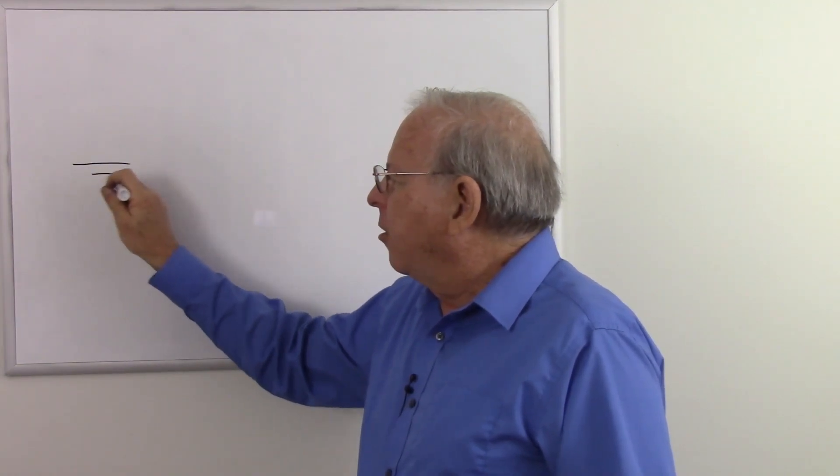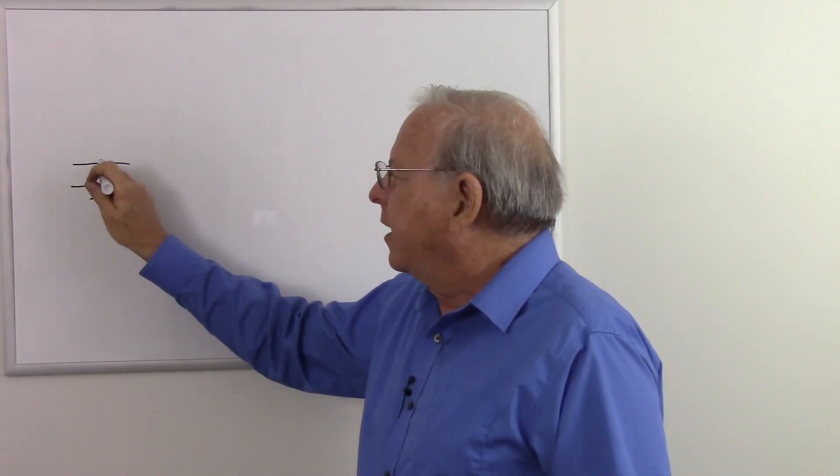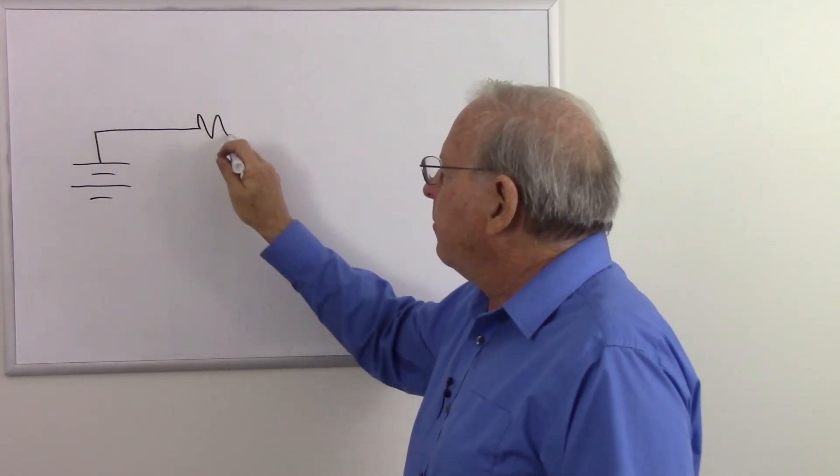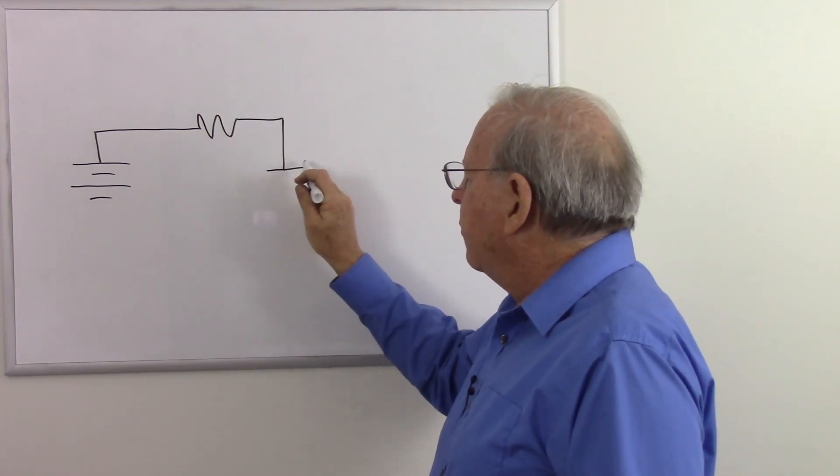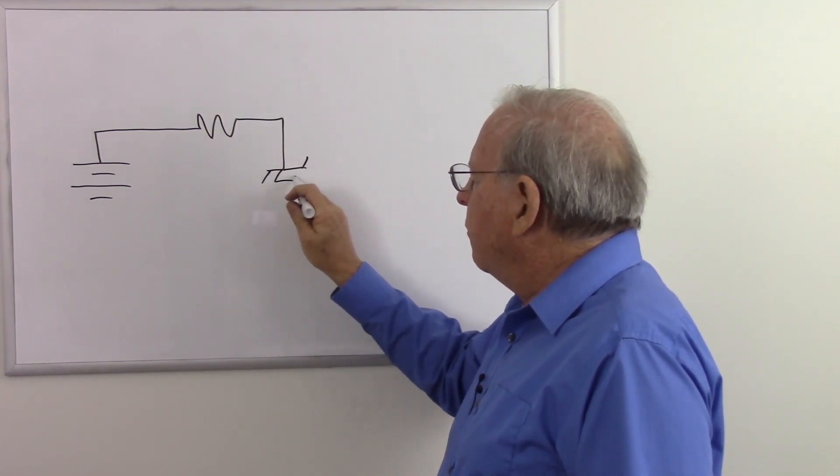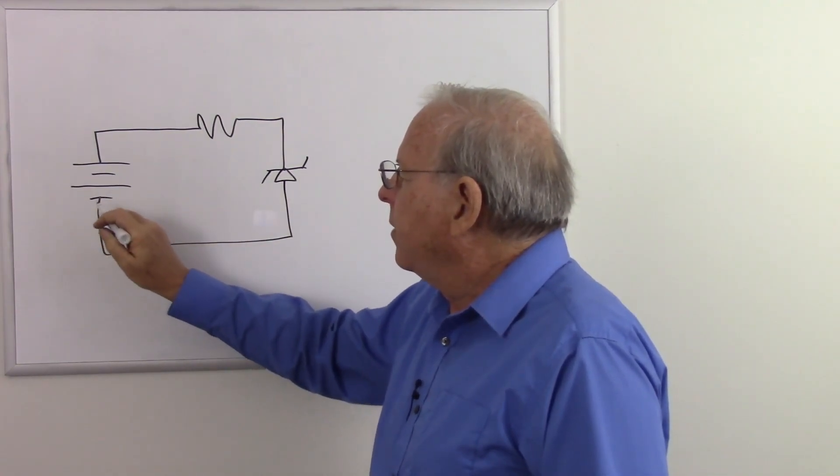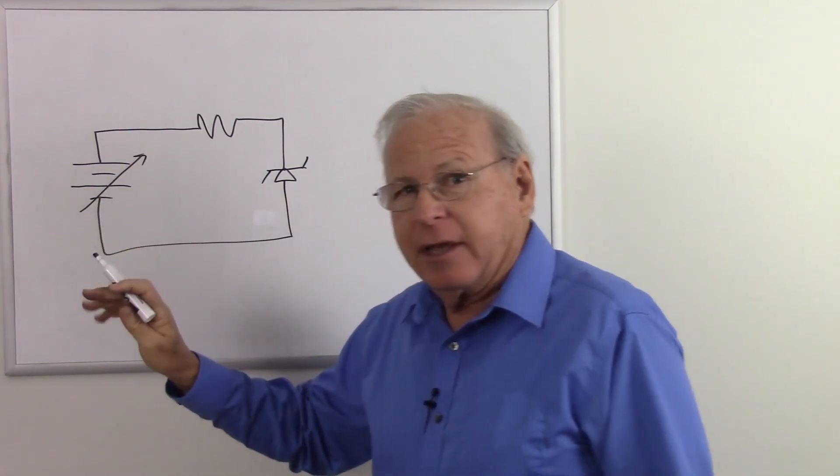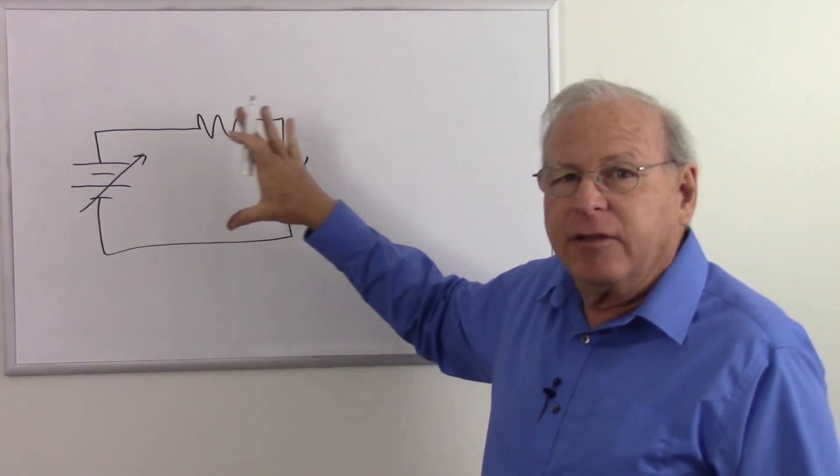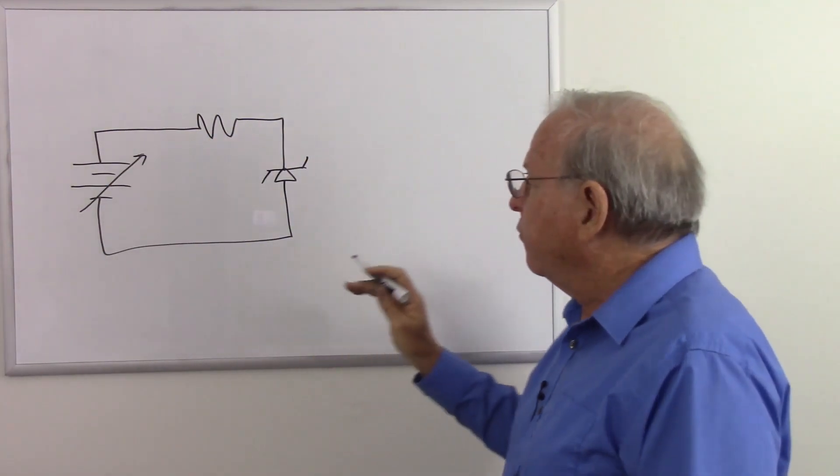So here's my thought experiment test circuit that I use to explain how Zener diodes work. I have a battery, a resistor, and our Zener diode. I will make this a variable battery because we want to see how the Zener diode reacts to changing source voltages.